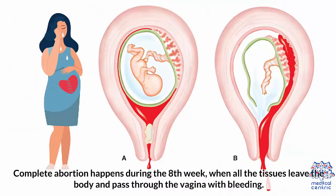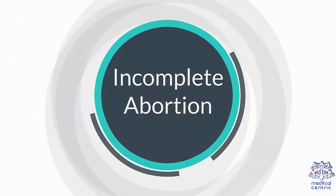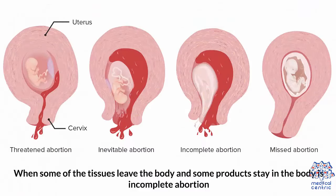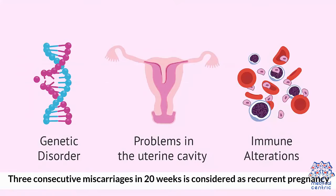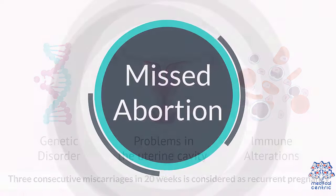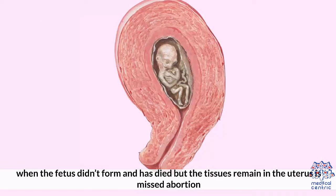Complete abortion happens during the eighth week, when all the tissues leave the body and pass through the vagina with bleeding. Incomplete abortion is when some of the tissues leave the body and some products remain inside. Three consecutive miscarriages within 20 weeks is considered recurrent pregnancy loss. Missed abortion is when the fetus has died but the tissues remain in the uterus.